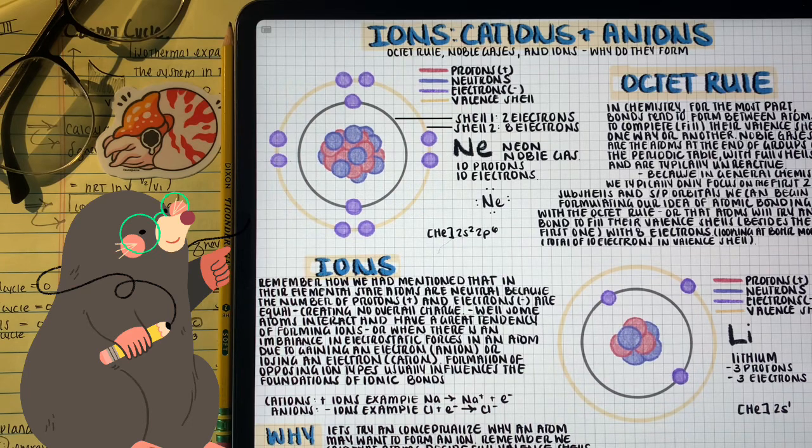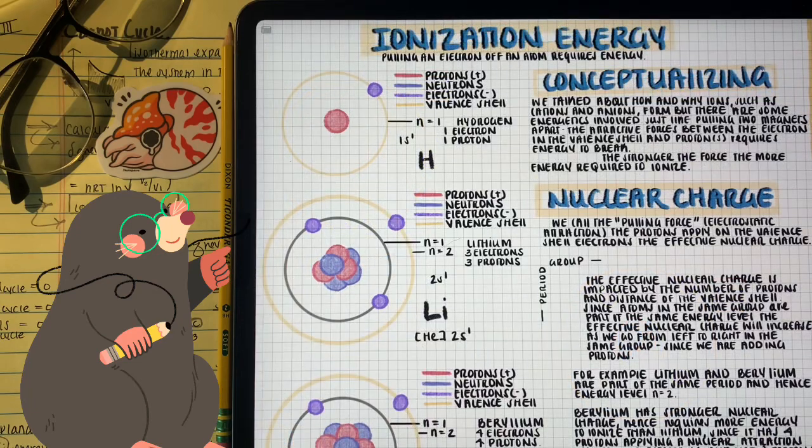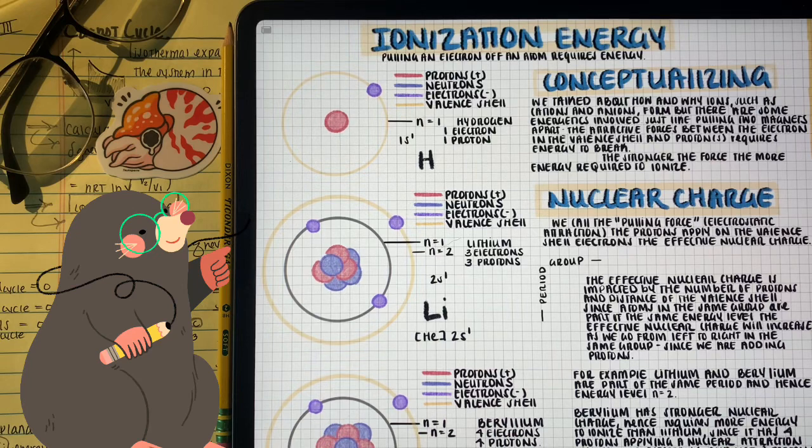Some of the properties we talked about were like ionization energy, the energy required to rip an electron off of an atom and form a cation. We know that the stronger the nuclear charge, the harder it is, the more energy is required to rip that electron off.